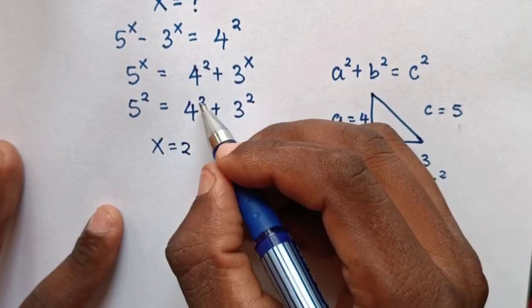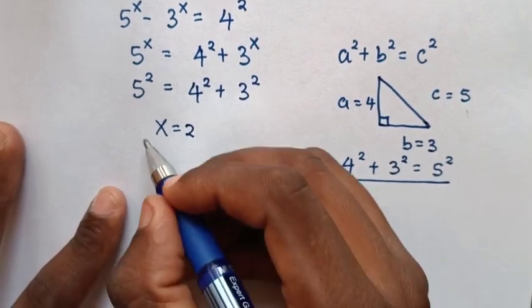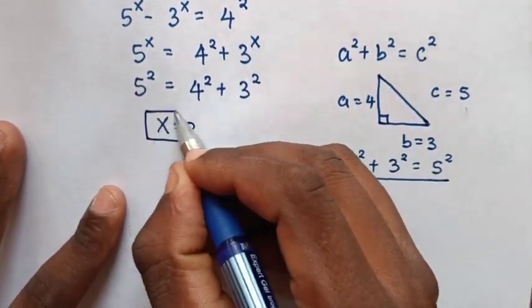And here, 4 squared is the same, plus same base, power of x is equal to 2, which is the same here, x = 2. Therefore the value of x is 2.